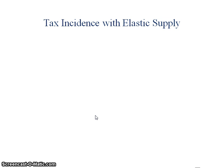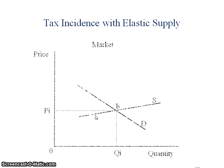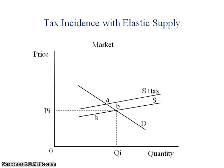Last one: a case of elastic supply. I've drawn a nice shallowly sloped supply curve. I'm going to shift the supply curve — what looks like a shift — to S plus tax. The vertical distance between those two curves again represents the per unit amount of the tax. I find where that tax intersects the demand curve and establish a new market price and quantity at P2 and Q2 respectively. Then I want to take a look at the price that the producer is ultimately getting to keep, P3.